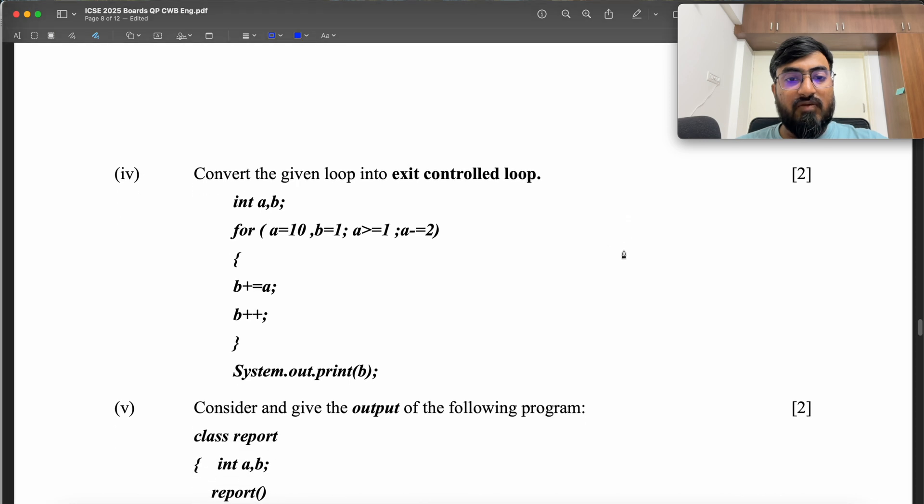Convert the given loop into exit controlled loop. The output of this loop is A is 10, B is 1. A is greater than equal to 1. So A is 10, then 8, 6, 4, 2. A greater than equal to 1 will be true till here. For 0, this is going to fail. So when A is 10, B starts at 1.